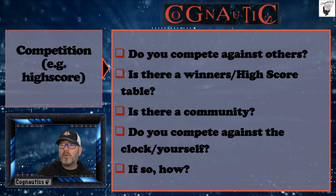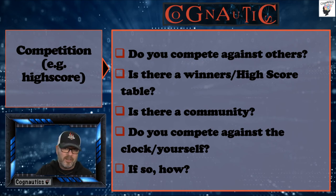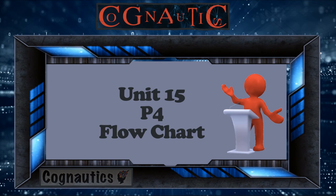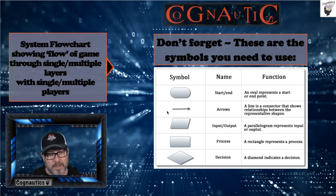This task is very much like P1 and M1, except rather than describing three existing games you're describing your own game, plus you're adding a flowchart. Most people end up producing a side and a half to two sides of A4 for the written description, and then produce their flowchart on top of that. So the next step is to think about your flowchart.